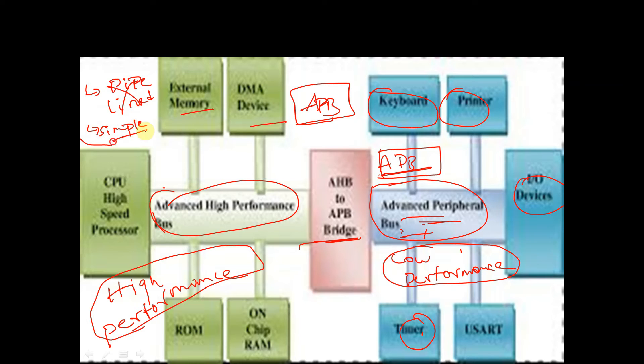APB interface is a simple synchronous protocol. For every transfer in APB protocol, we need at least two cycles for completing one transfer. APB protocol is low cost and optimized for minimal power consumption.